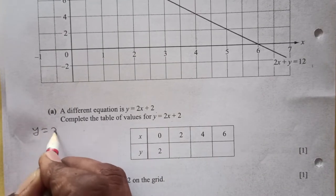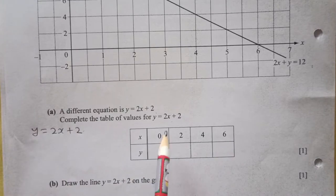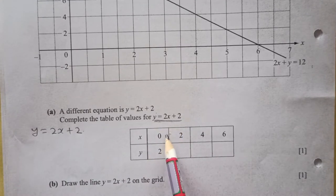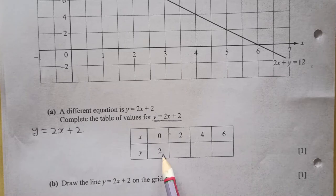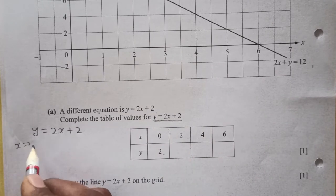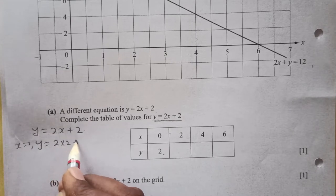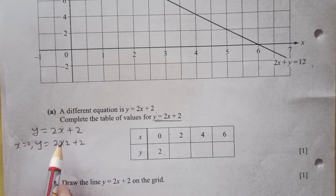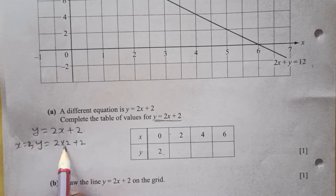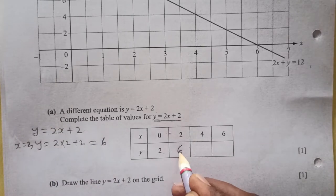We have y = 2x + 2. When x is 0, y is 2 — that's given. When x is 2, y is going to be 2 times 2 plus 2. You are just replacing x by the given value. 2 times 2 is 4, and 4 plus 2 is 6. So y is 6.